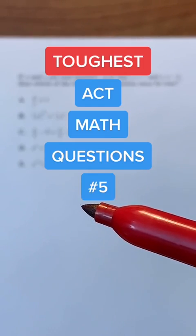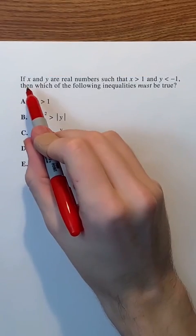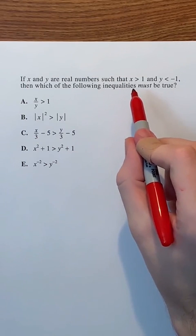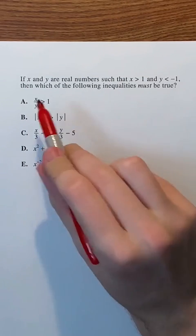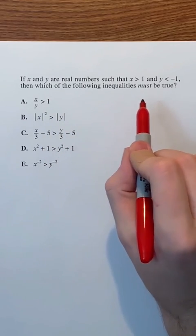Toughest ACT Math Questions number 5. If x and y are real numbers such that x is greater than 1, so it's positive, and y is less than negative 1, so it's negative, keep this in mind, then which of the following inequalities must be true?